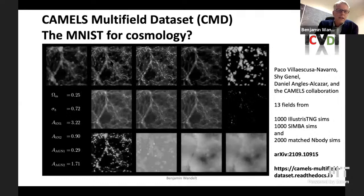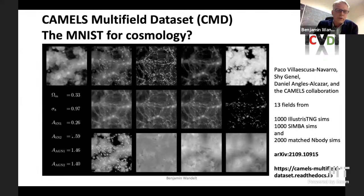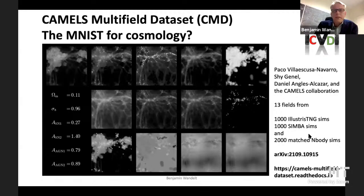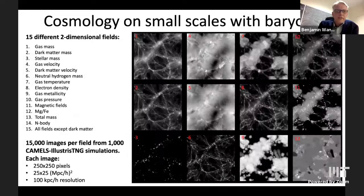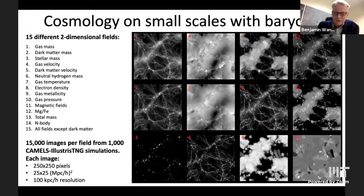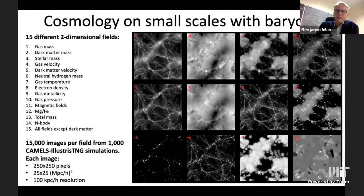Here are slices through these hydro simulations — four different cosmological parameters and four parameters that parameterize the feedback in these hydro simulations. There are 13 fields shown here: all these different hydro outputs, plus also an n-body output. There's also a case where we include all 11 of the hydro outputs not related to n-body or dark matter velocity. These are small-scale simulations in terms of cosmology — 25 megaparsec — going down to 100 kiloparsec resolution in these images. We want to see whether there is cosmological information in any of these fields and whether we can extract it. It turns out we can.